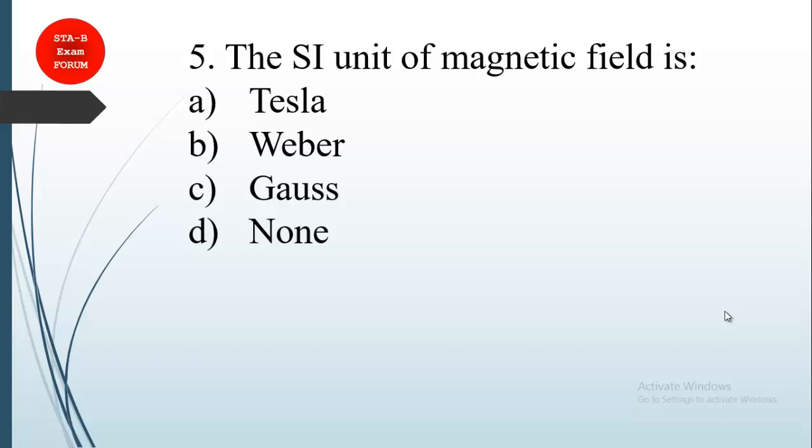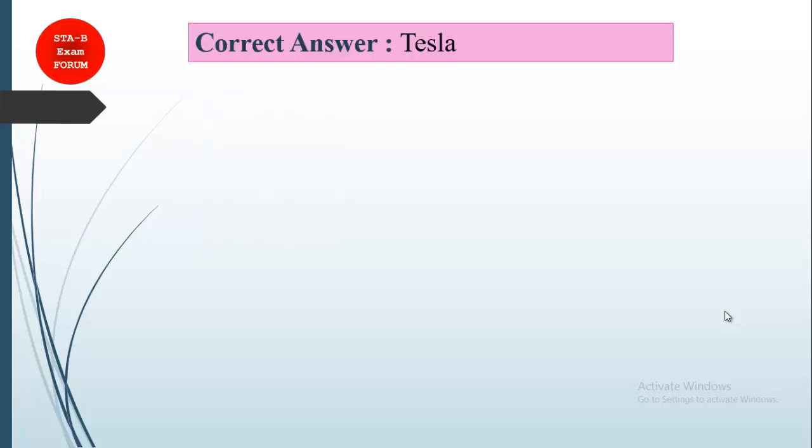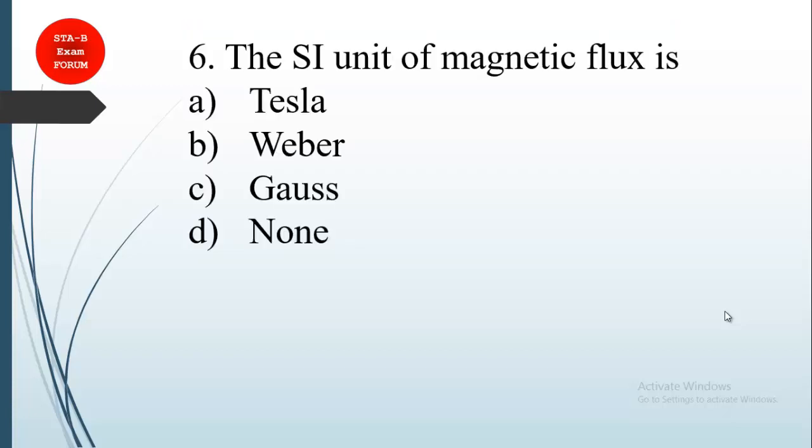Gauss is also a unit of magnetic field, but it is CGS unit, not SI unit. So the correct answer is option A, Tesla. Tesla is the SI unit of magnetic field.